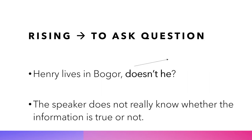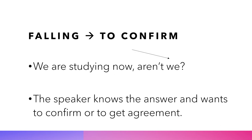Intonations: rising intonation means you are asking a question. For example, 'Henry lives in Bogor, doesn't he?' — in this utterance, the speaker does not really know whether the information is true or false, so this kind of question is considered a true question. Falling intonation is used when the speaker wants to confirm. For example, 'We are studying now, aren't we?' — the speaker knows the answer and wants to confirm or get agreement from the hearer.